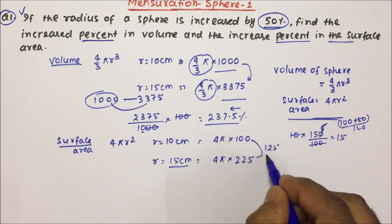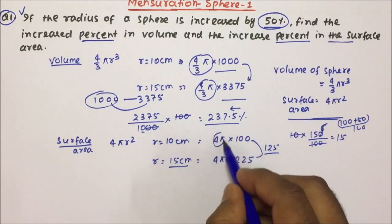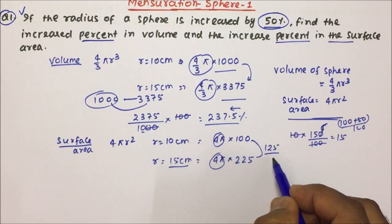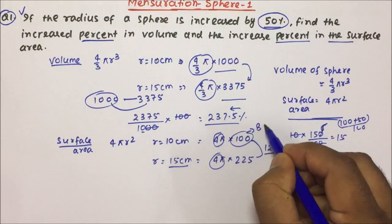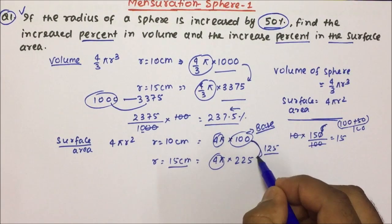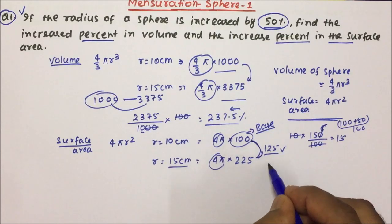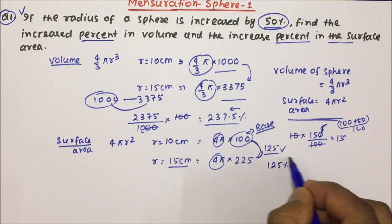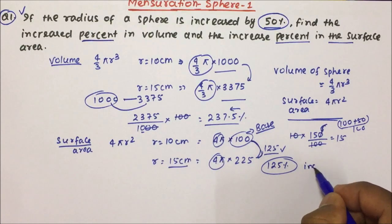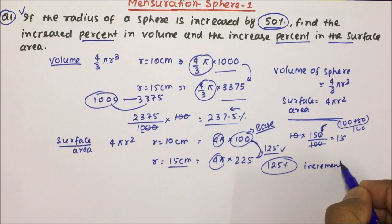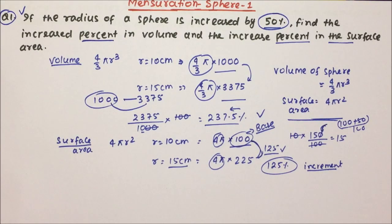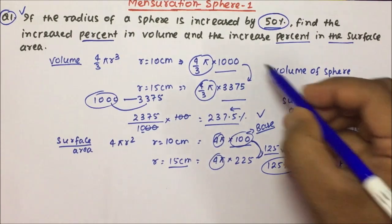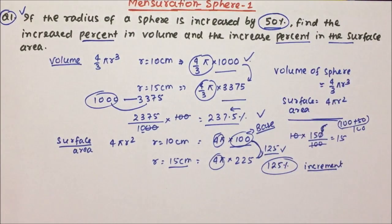Now you can see — from 100 it has increased to 225, which is an increase of 125. Since 4 π is common, we can ignore it. So 125 is increased from a base of 100. When the base is 100, that is directly 125 percent increment. Here the base was 1000 for volume so we had to calculate, but here the base is 100 so we can directly say 125 percent increment.